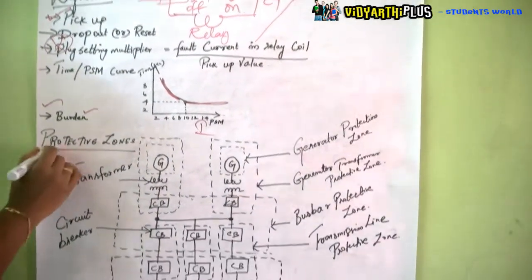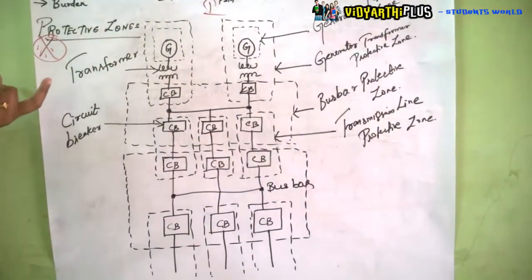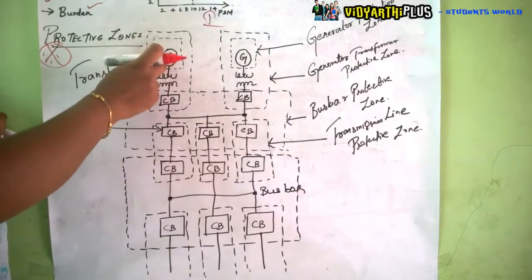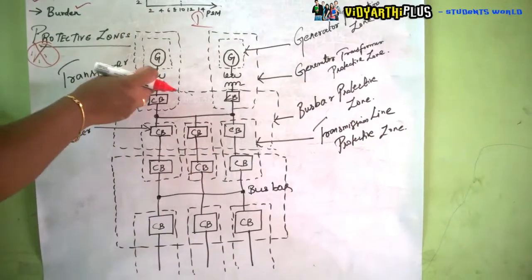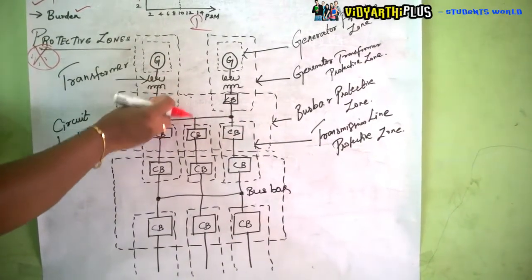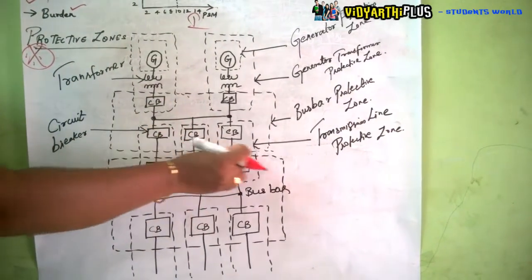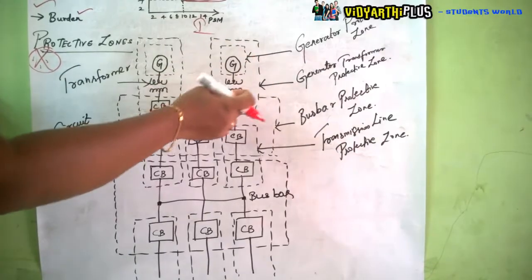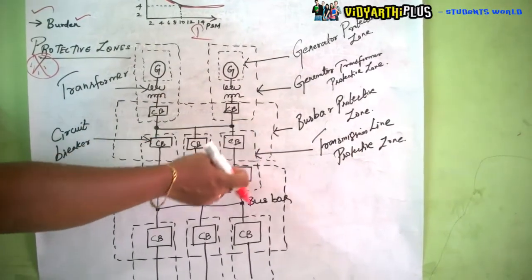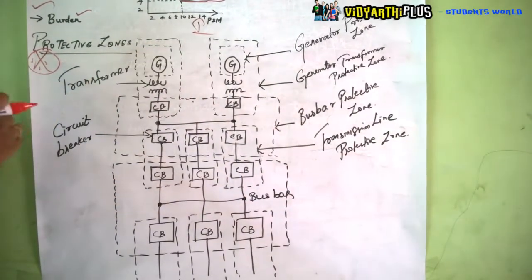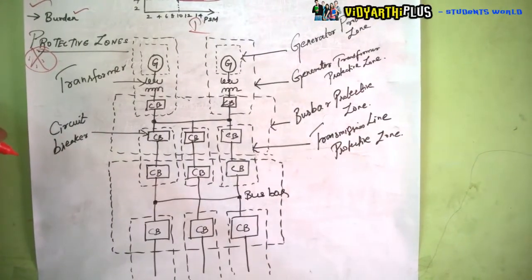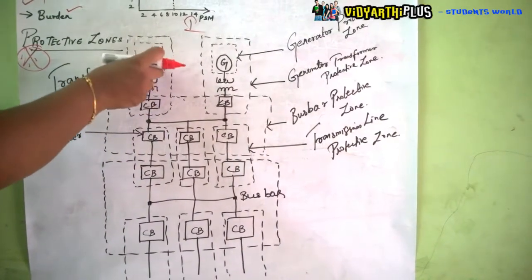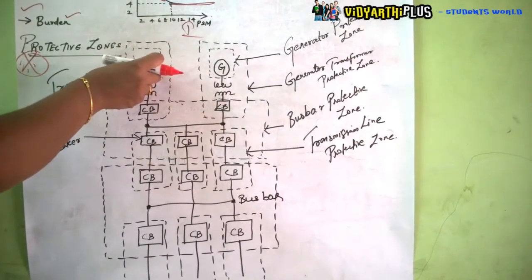Now we come to protective zones, a very important topic in relaying. The system includes a generator connected to a transformer and transmission lines, with a circuit breaker connected at every part for protection. There are four protection zones: the generator protection zone, the transformer protection zone, the bus bar protection zone, and the transmission line protection zone. If a fault occurs in the generator, a relay and circuit breaker in the generator protective zone will sense the fault and immediately isolate it from the rest of the system.